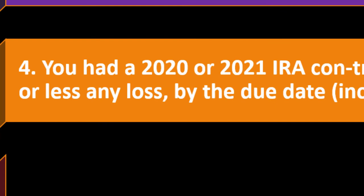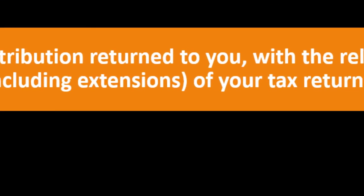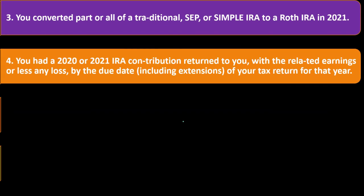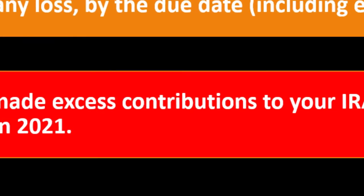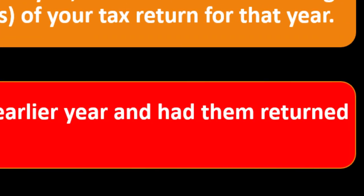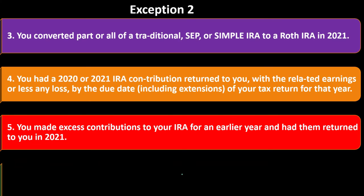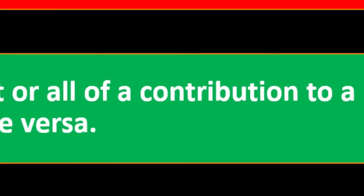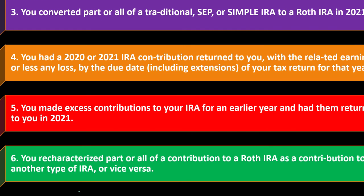Item four: you had a 2020 or 2021 IRA contribution returned to you with related earnings or less any loss by the due date, including extensions, of your tax return for that year. Item five: you made an excess contribution to your IRA for an earlier year and had it returned to you in 2021 — meaning you put too much into the IRA and it was returned. Item six: you recharacterized part or all of a contribution to a Roth IRA as a contribution to another type of IRA, or vice versa.